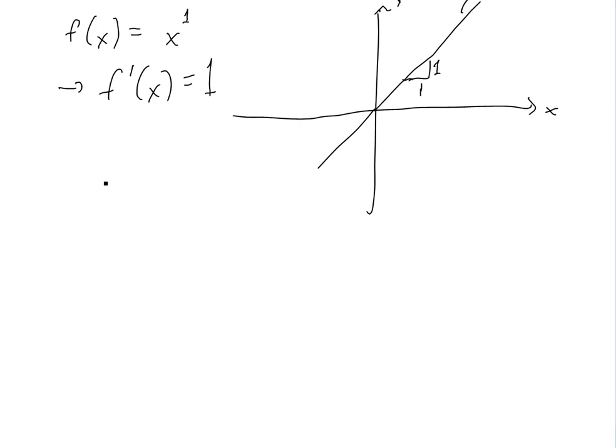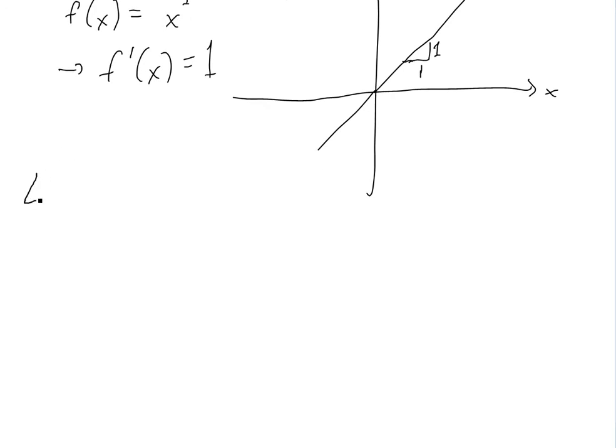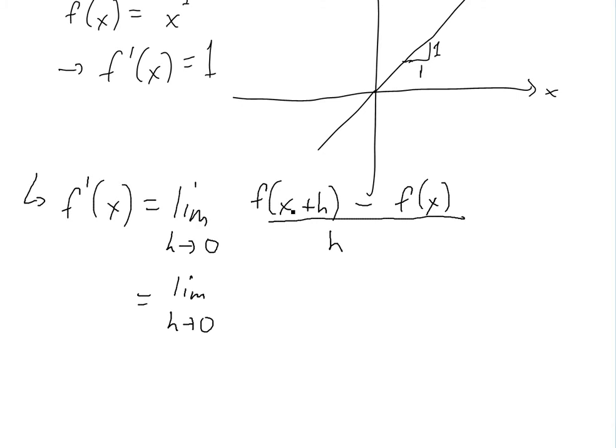We can even prove this using the definition of the derivative. We write it down basically, limit h approaches 0 of f(x+h) minus f(x) divided by h as the definition of the derivative. So if we input this value, the function is x, so we'll just have x+h minus x, which is f(x) over h. These cancel, and then this is h over h, so we're just left with 1.